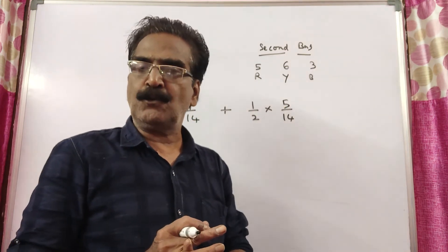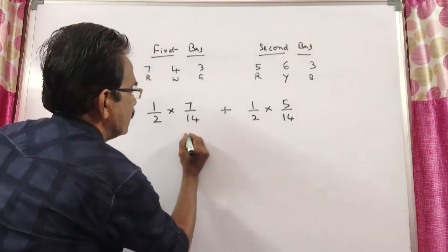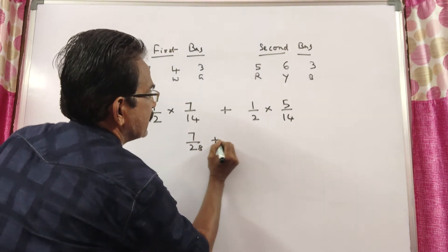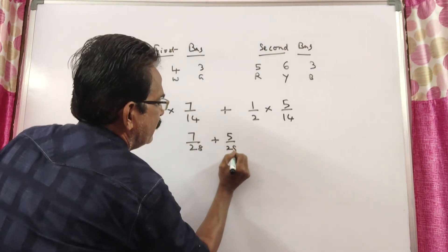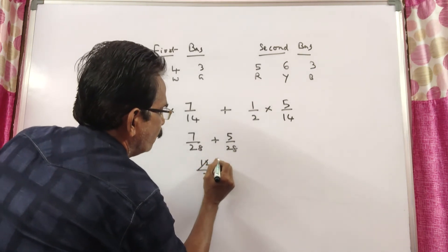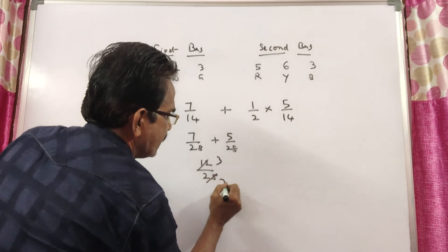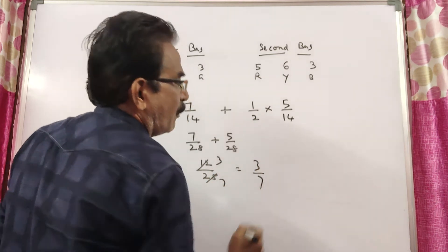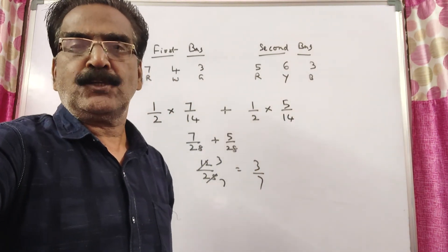So, we have to add these 2 probabilities. So, this is 7 by 28 plus 5 by 28, that is equal to 12 by 28. So, 3s, 4s, 4s, 7s. So, your final probability is 3 by 7, friends. Thank you.